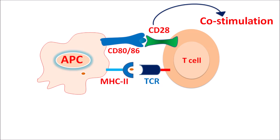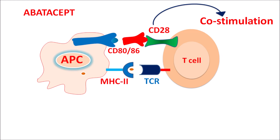Abatacept is a disease-modifying anti-rheumatic drug that can modify this immune response and thereby control the inflammatory cascade. Abatacept can bind to CD28, thereby preventing the binding of CD80 or CD86, resulting in the inhibition of co-stimulation. Due to loss of co-stimulation, T-cells are not activated, resulting in a decreased immune response. In this way, abatacept acts as a disease-modifying anti-rheumatic drug.